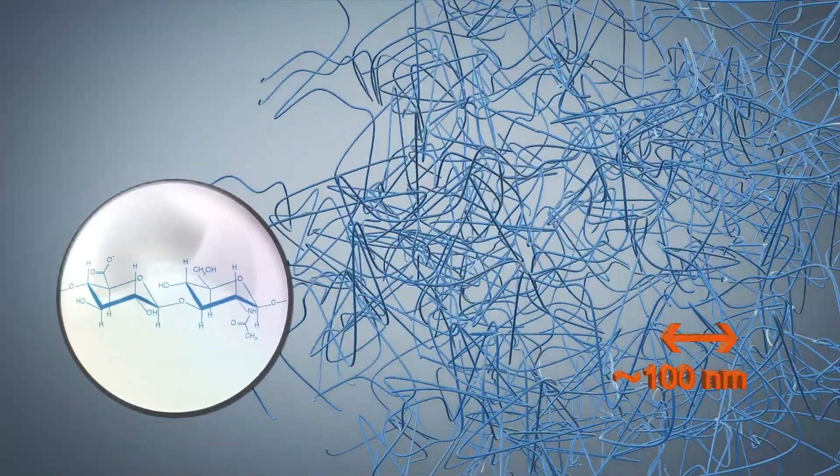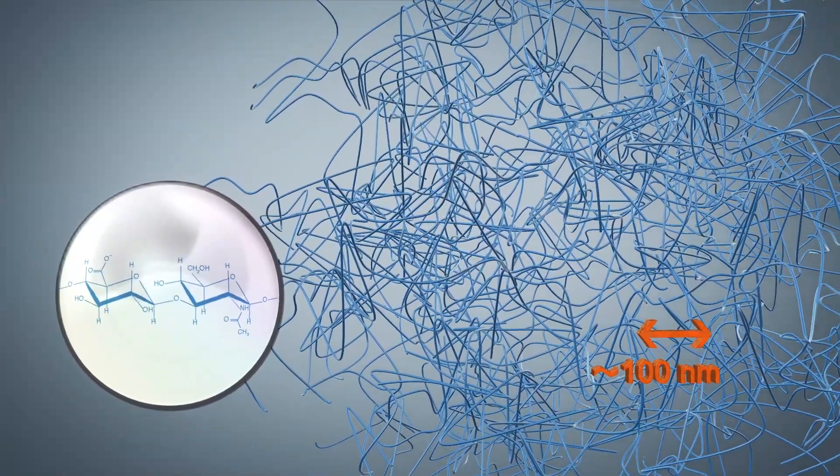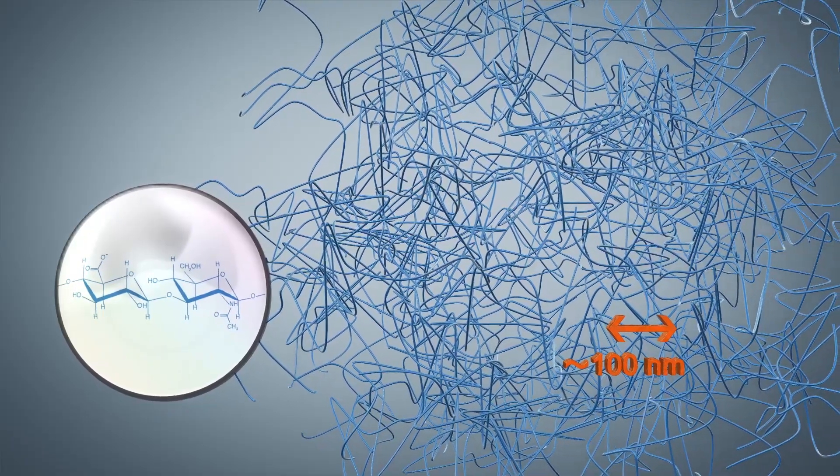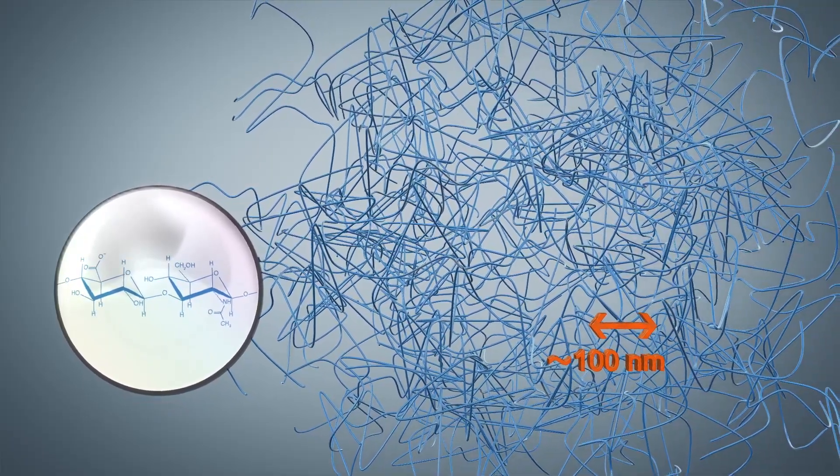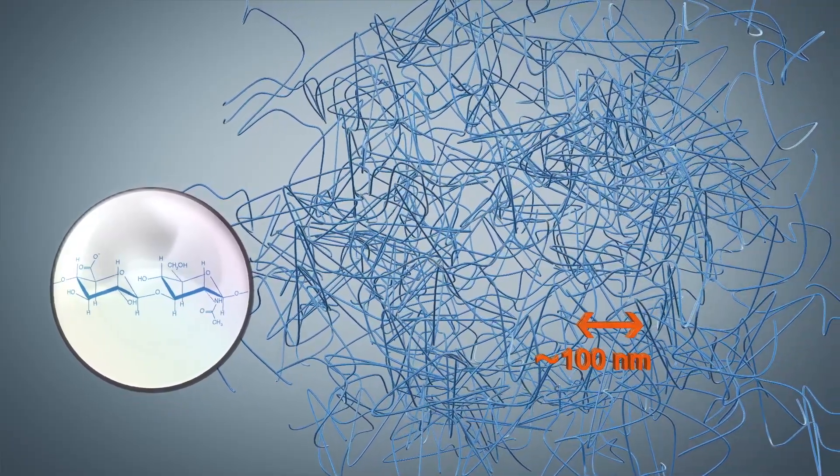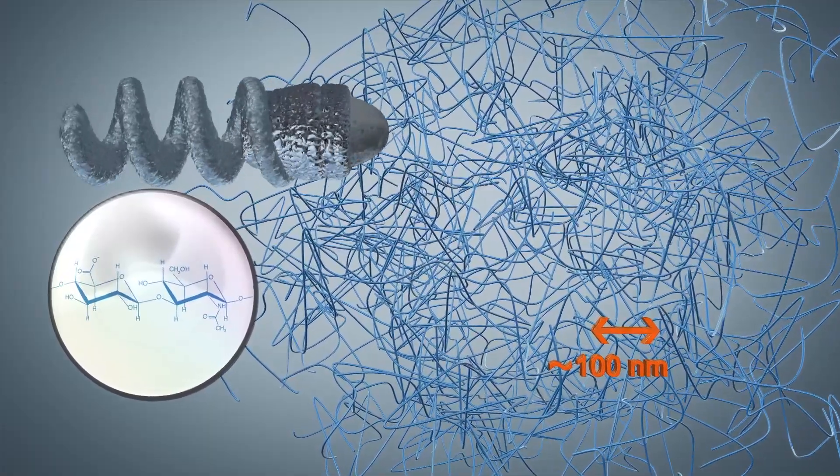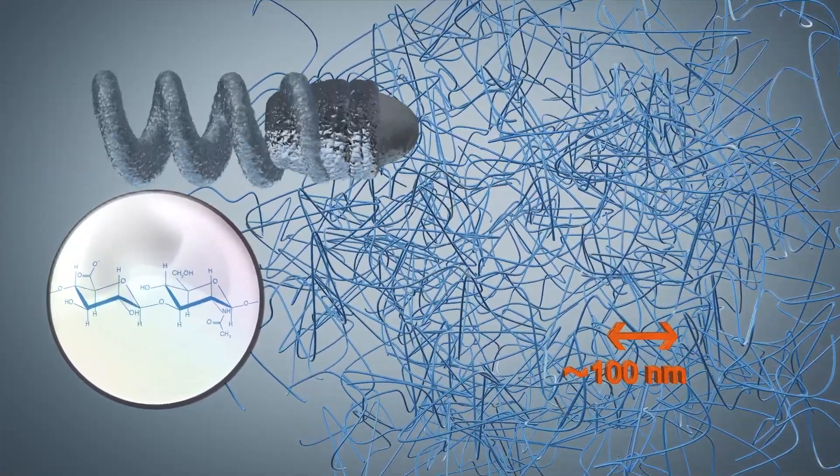In more complex non-Newtonian environments, such as hyaluronic acid, the ability to propel depends strongly on the propeller's size relative to the polymeric material's mesh size. Particles with a width of hundreds of nanometers are too big to pass through the mesh and are completely immobilized in hyaluronic acid.